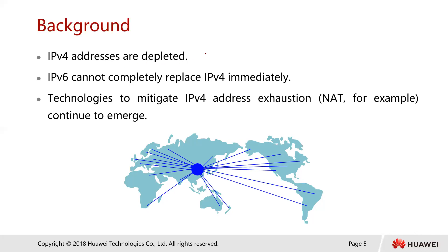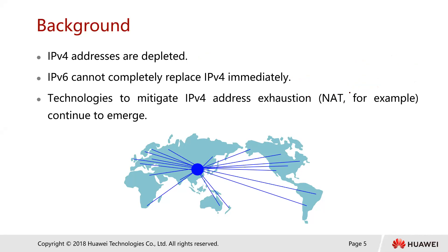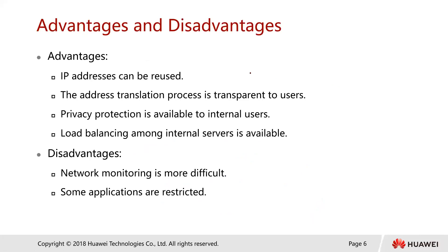IP version 4 addresses are depleted. Almost everyone today has a device, and these devices are all assigned IP addresses. IP version 6 cannot completely replace IP version 4. Technologies to mitigate IPv4 address exhaustion include network address translation, CIDR notation, and variable length subnet mask. In this course, we want to purely focus on network address translation. One advantage of NAT is that you can reuse IP addresses.